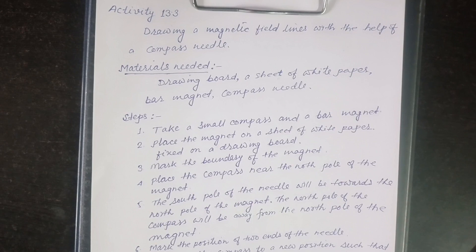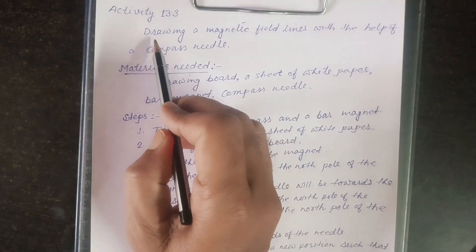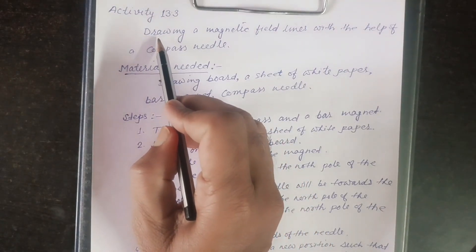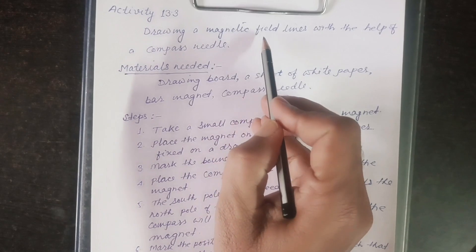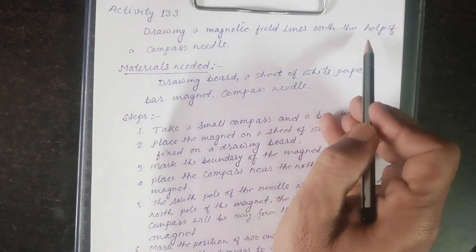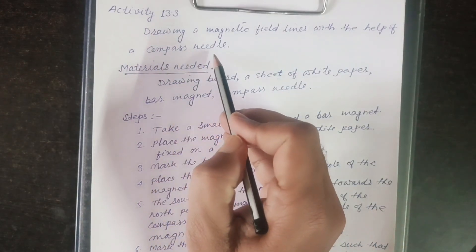Hello everyone, let us understand activity 13.3 of chapter magnetic effect of electric current. In this activity, we will draw magnetic field lines with the help of a compass needle.